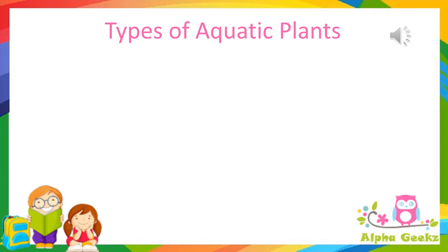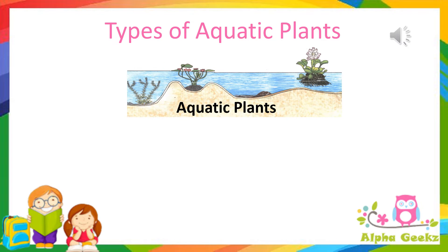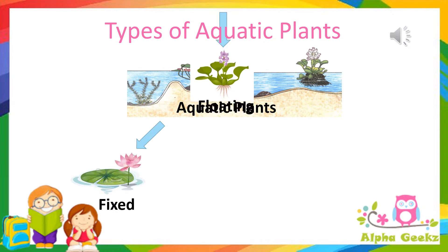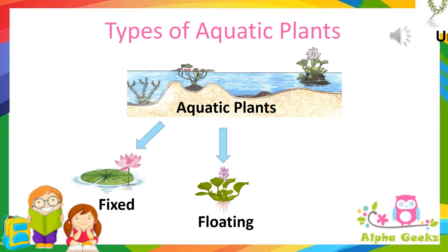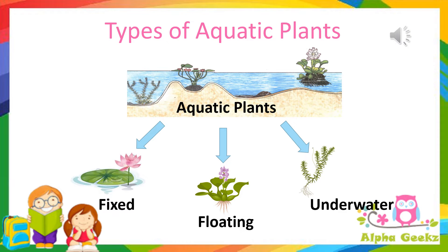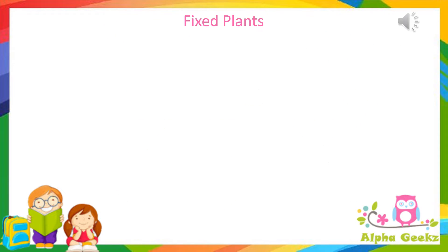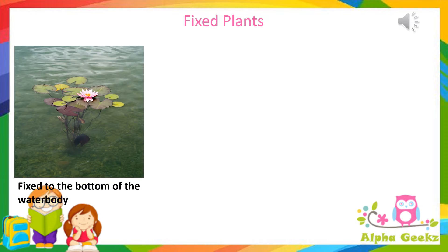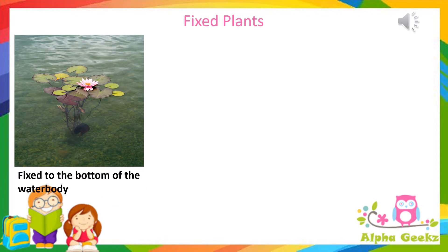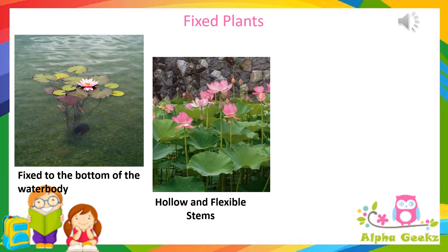Types of aquatic plants: aquatic plants are of three types — fixed plants, floating plants, and underwater plants. Fixed plants: the roots of such plants are much reduced and are fixed to the mud at the bottom of the pond.